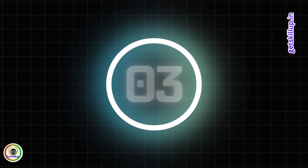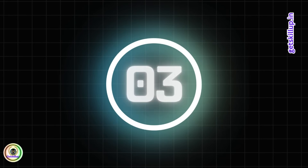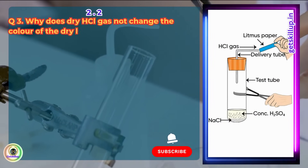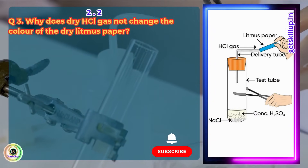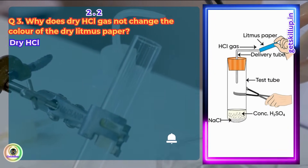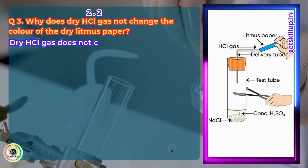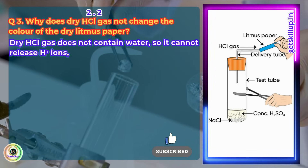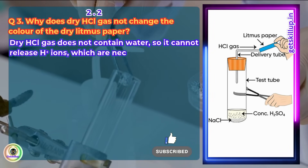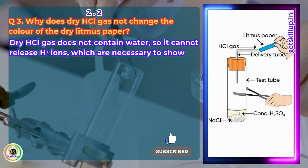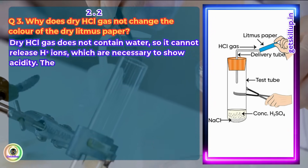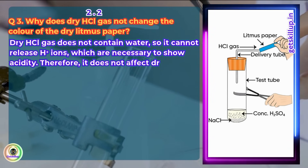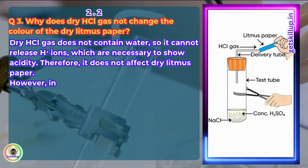Question 3. Why does dry HCl gas not change the color of dry litmus paper? Dry HCl gas does not contain water, so it cannot release H+ ions, which are necessary to show acidity. Therefore, it does not affect dry litmus paper.